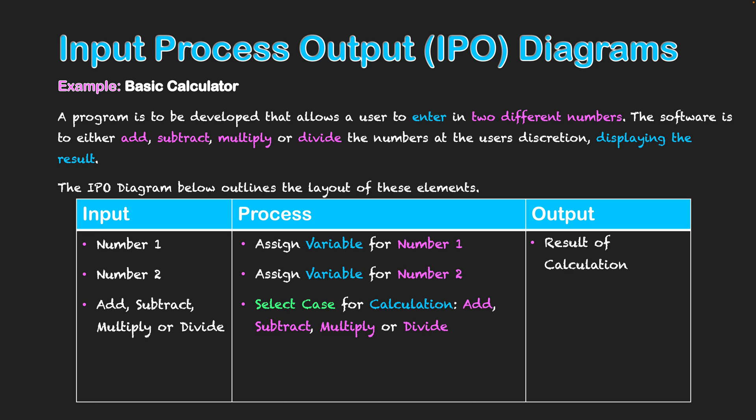Once the operation is selected, the calculation takes place between number one and number two based on what the user selected. The program then displays that calculation result — which is a process in itself — resulting in the final output: the result of the calculation. This illustrates how we can work backwards: starting with the output, determining what inputs are needed, then thinking about what processes will turn that input into the output.